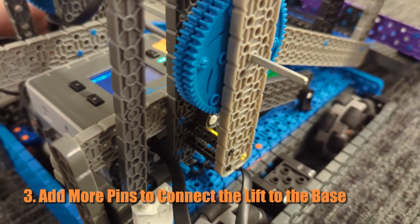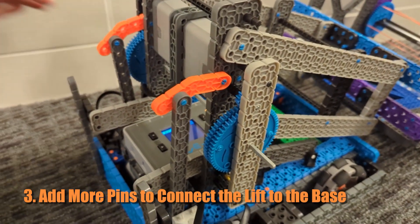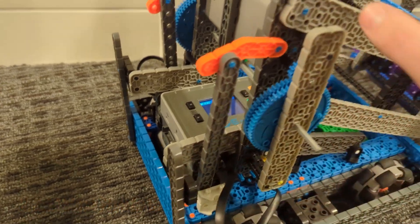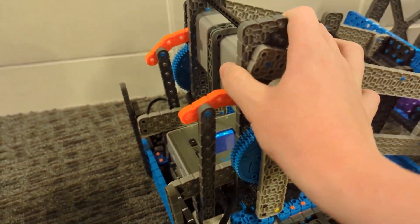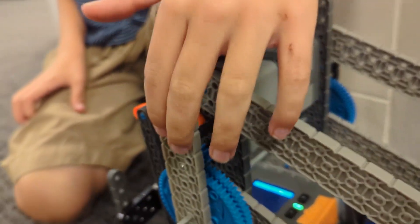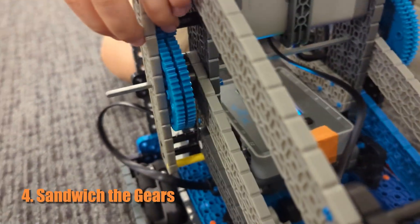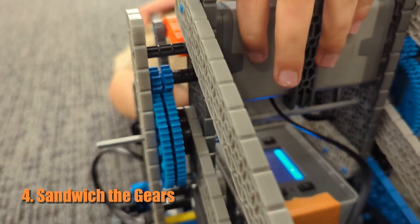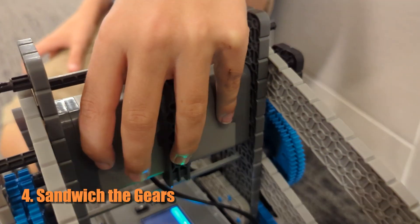So you added these that way it can't move back. What did you add to help support it? I sandwiched the gears because they used to be moving all over the place because the motors were being pushed forward.